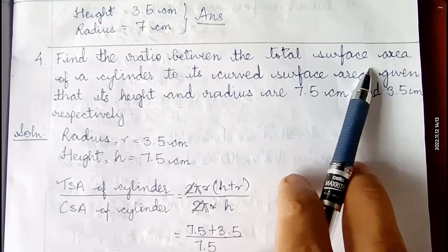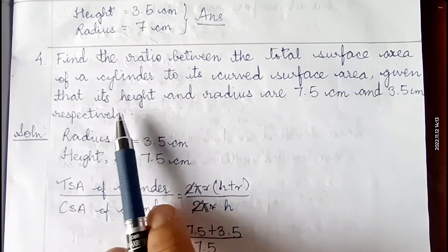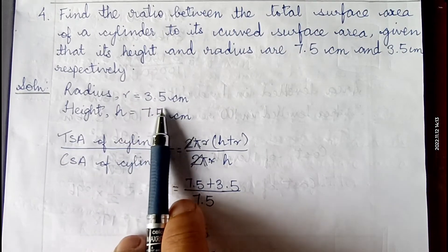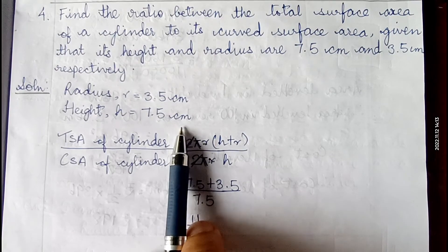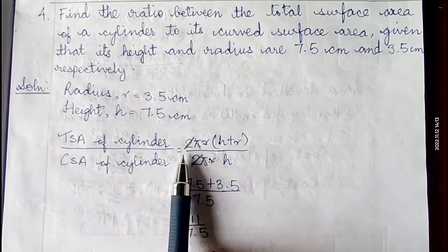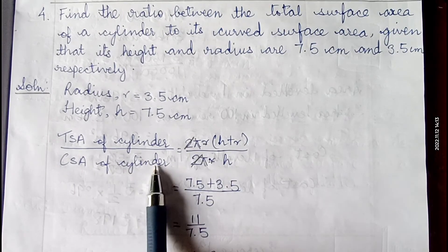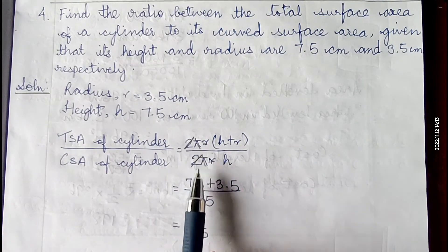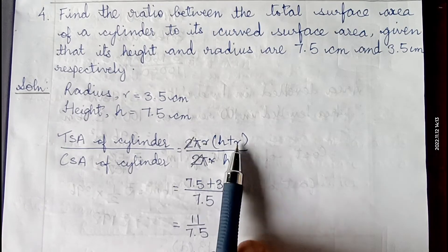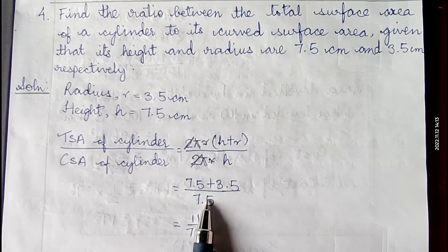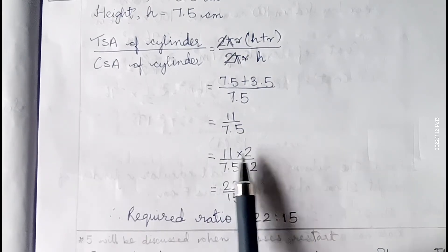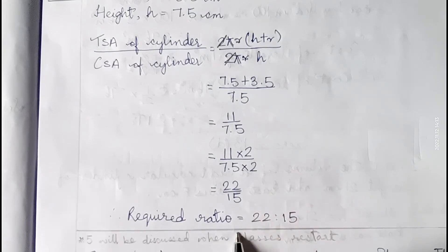Question 4: Find the ratio of total surface area to curved surface area of a cylinder with height 7.5 cm and radius 3.5 cm. TSA/CSA = 2πr(h + r) / 2πrh. The 2πr cancels, leaving (h + r)/h = (7.5 + 3.5)/7.5 = 11/7.5. Multiplying numerator and denominator by 2 gives 22/15. Therefore the required ratio is 22:15.